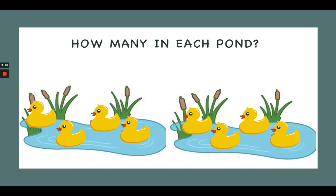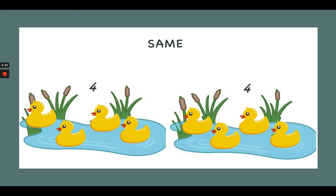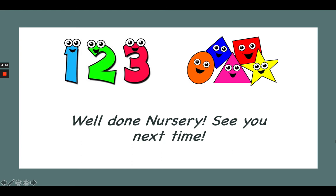All right, let's try this one. Can you work out whether the two ponds have the same amount of ducks or different? Pause the video if you need to. On the count of three, call out whether the ponds have the same or different amount of ducks. 3, 2, 1. Well done, give yourselves a clap! Pond 1 and pond 2 have the same amount of ducks. Let's count pond 1: 1, 2, 3, 4. And pond 2: 1, 2, 3, 4. Pond 1 and pond 2 have the same amount of ducks. Well done!